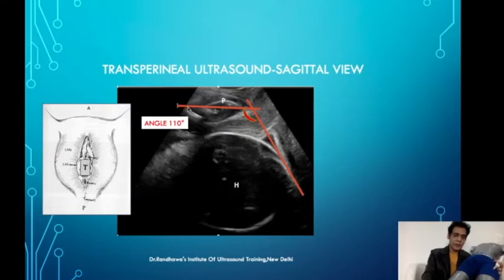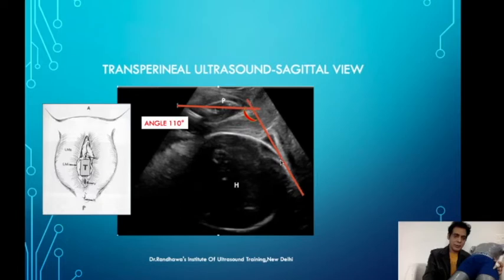The pubic symphysis, as you can see in this picture, starts somewhere here and ends somewhere here. We draw a line through the centre of the pubic symphysis, and from where it ends we draw another line that goes to touch the head tangentially. The angle between these two lines is what we are concerned about.